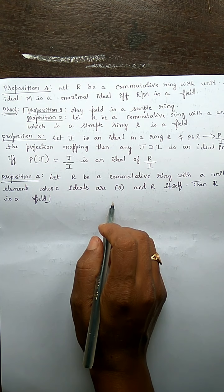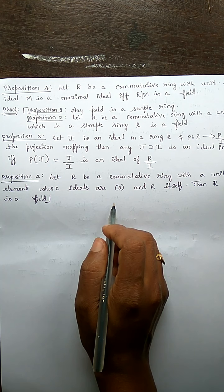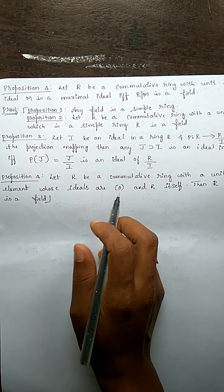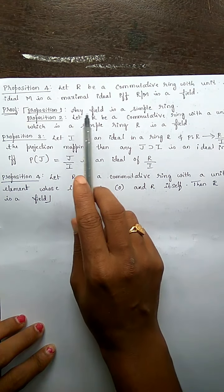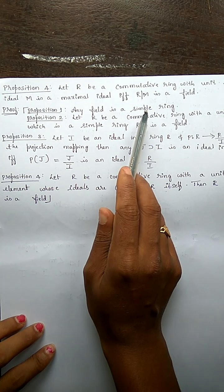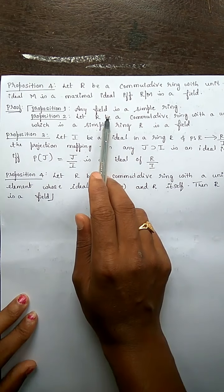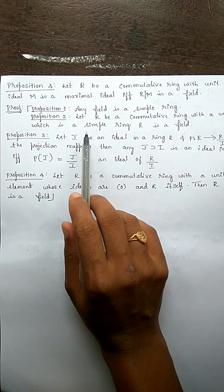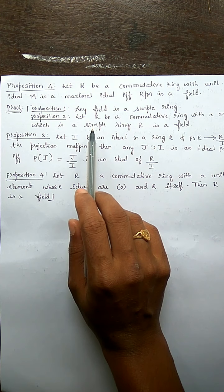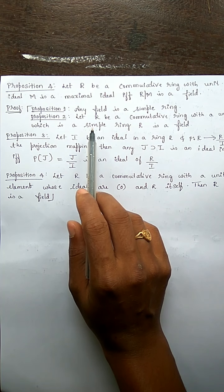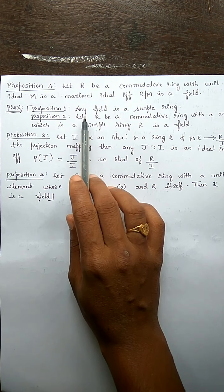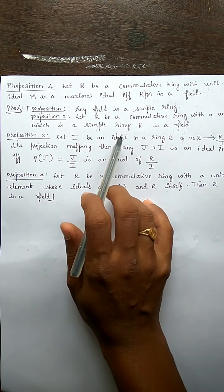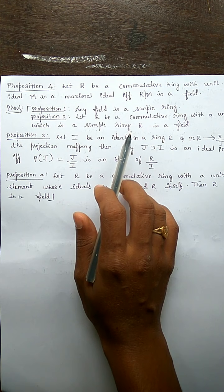To prove this proposition we need four auxiliary propositions. Proposition 1, already proved previously: any field is a simple ring — meaning the ring has only two improper ideals, 0 and R itself. Proposition 2: let R be a commutative ring with a unit element which is a simple ring, then R is a field. Note that a simple ring is not always a field unless it is also commutative with a unit element.